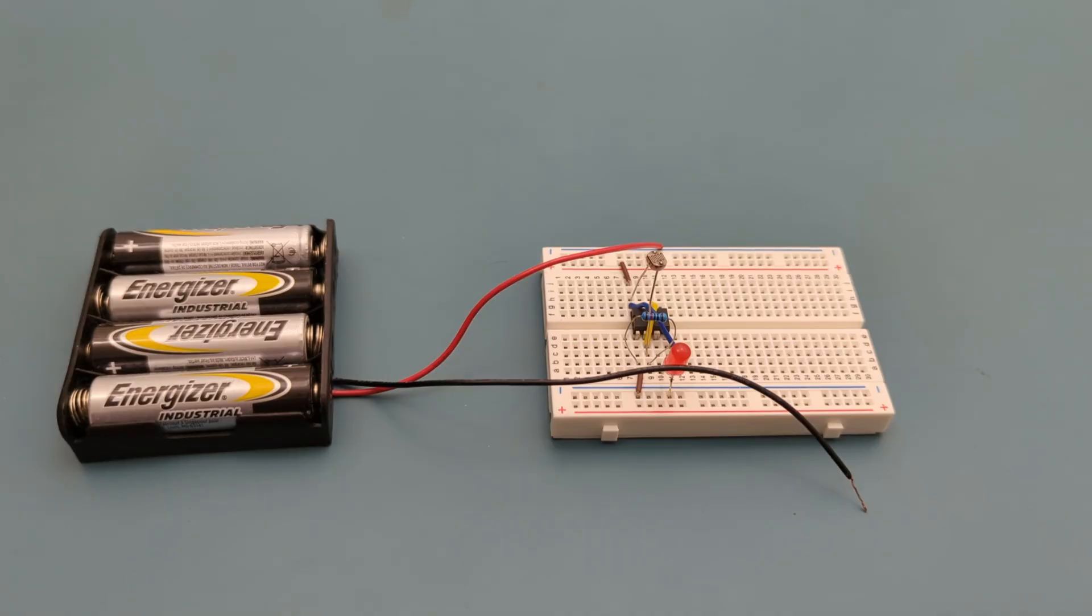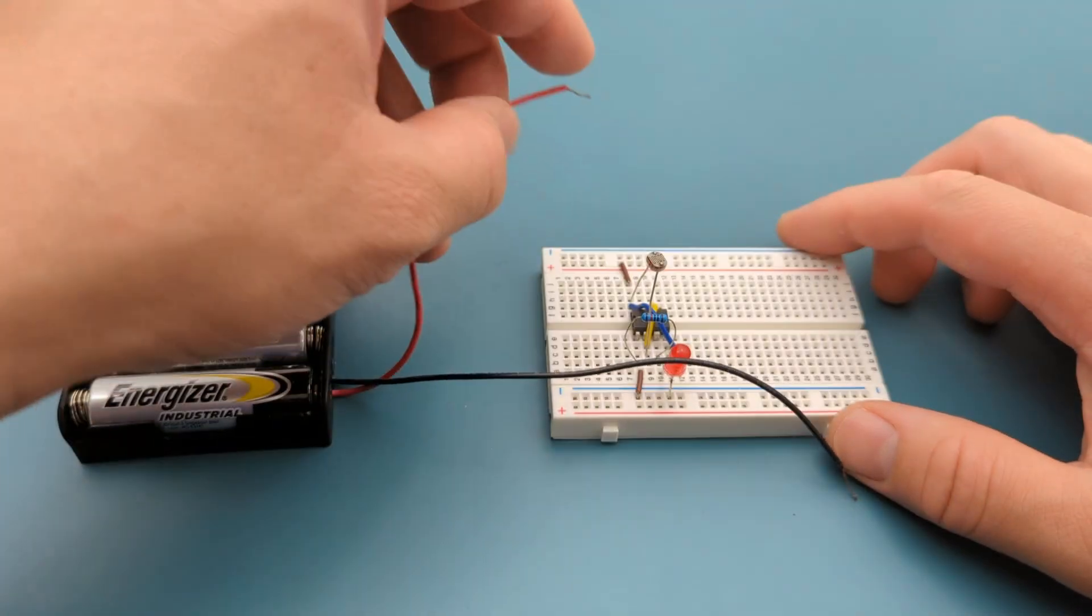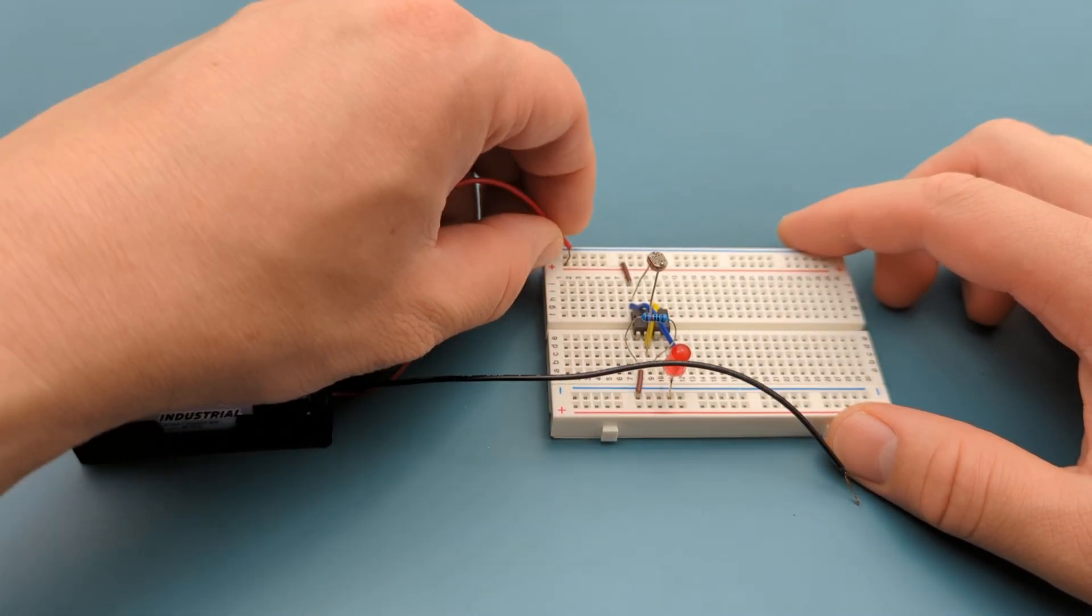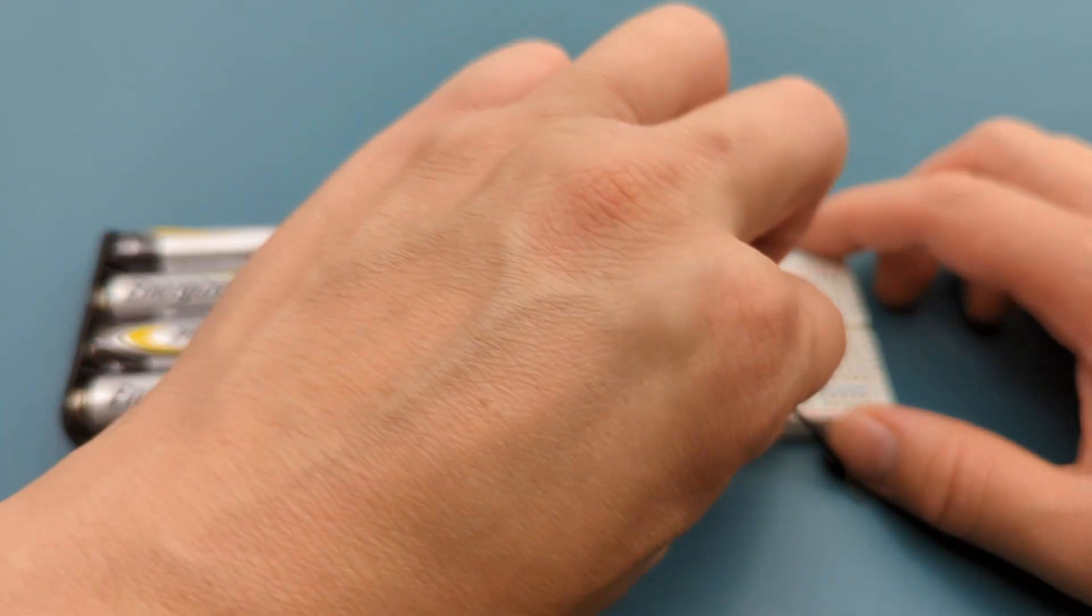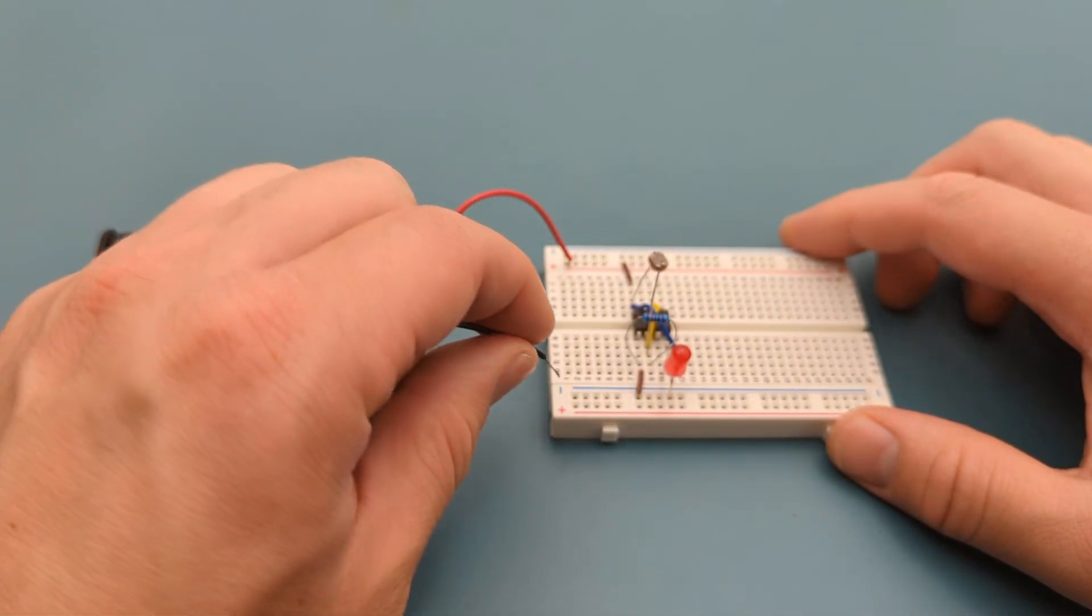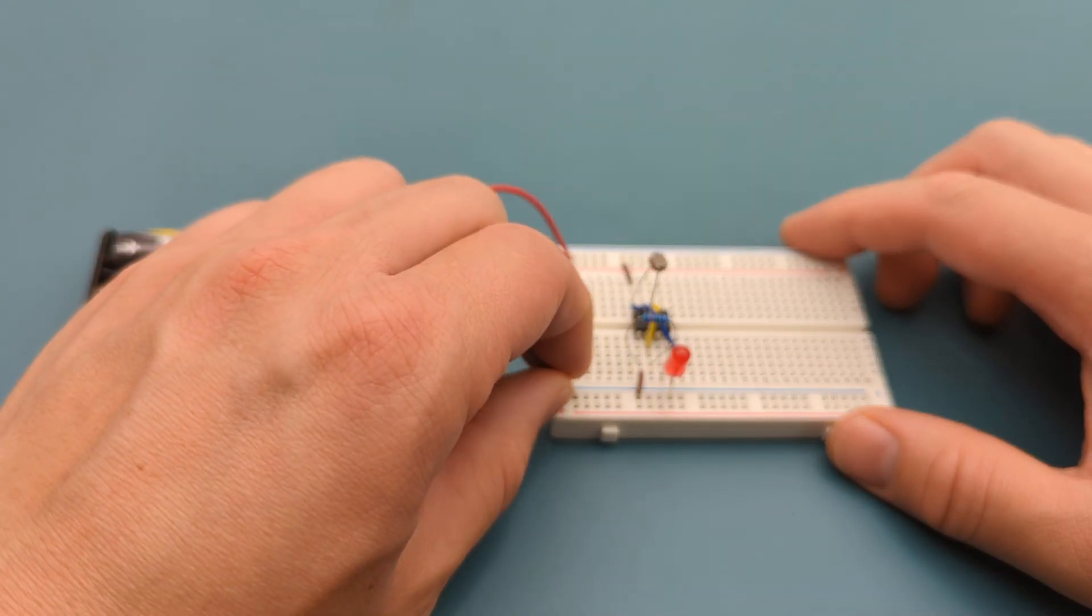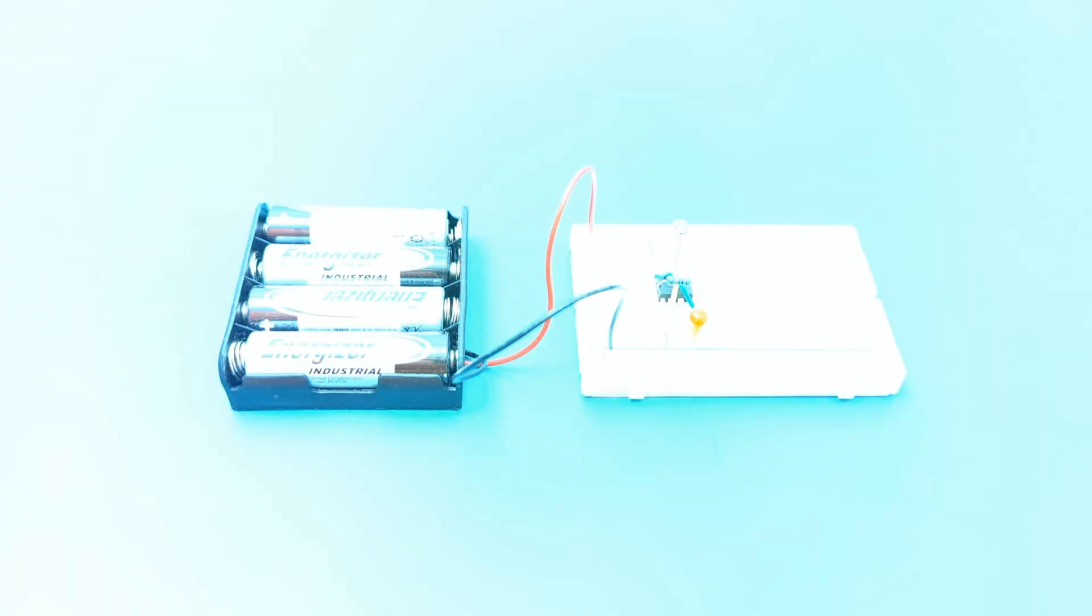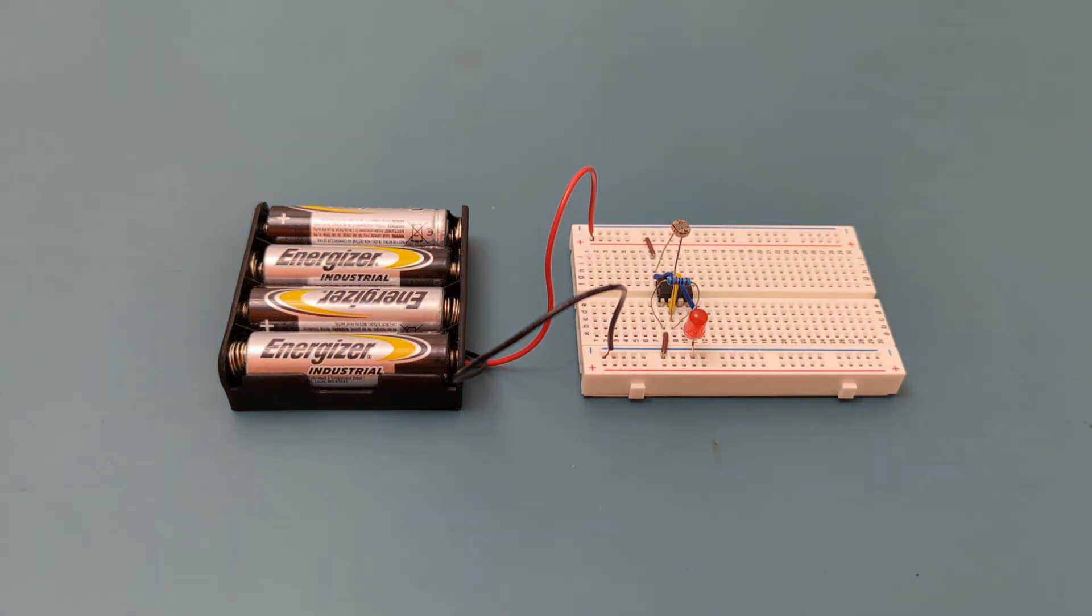It's time to connect the power supply. Insert the positive lead to the positive rail. Insert the negative lead to the negative rail. We have successfully completed the circuit. As you can see, the LED turns on when it's dark and turns off when there is light.